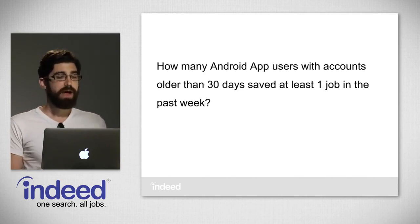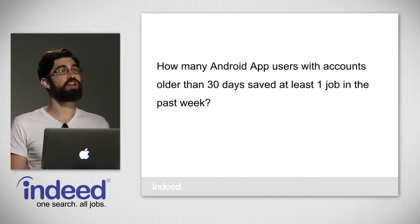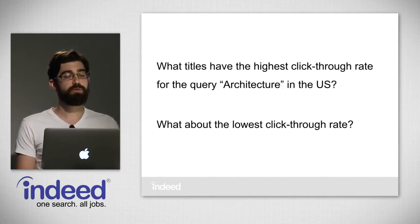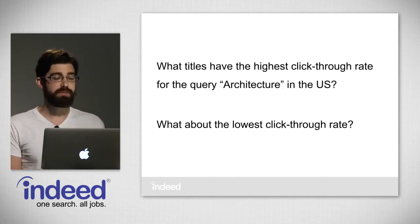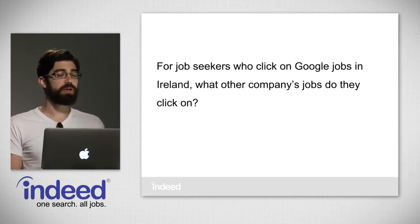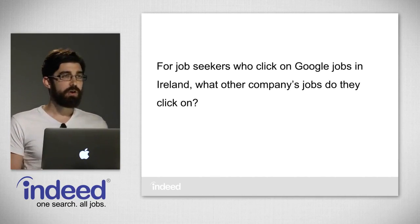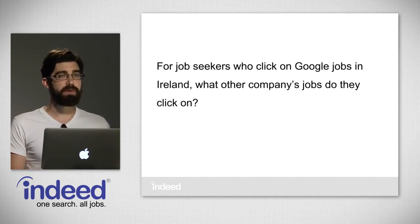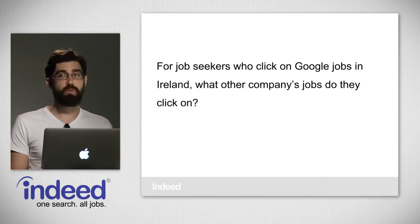For example: how many Android app users with accounts older than 30 days saved at least one job in the past week? Or what titles have the highest click-through rate for the query 'architecture' in the US? What about the lowest click-through rate? Or for job seekers who click on Google Jobs in Ireland, what other company's jobs do they click on? What's really powerful about Imhotep is that we can answer all of these questions trivially with a few clicks in a web app, without any expensive ETL.